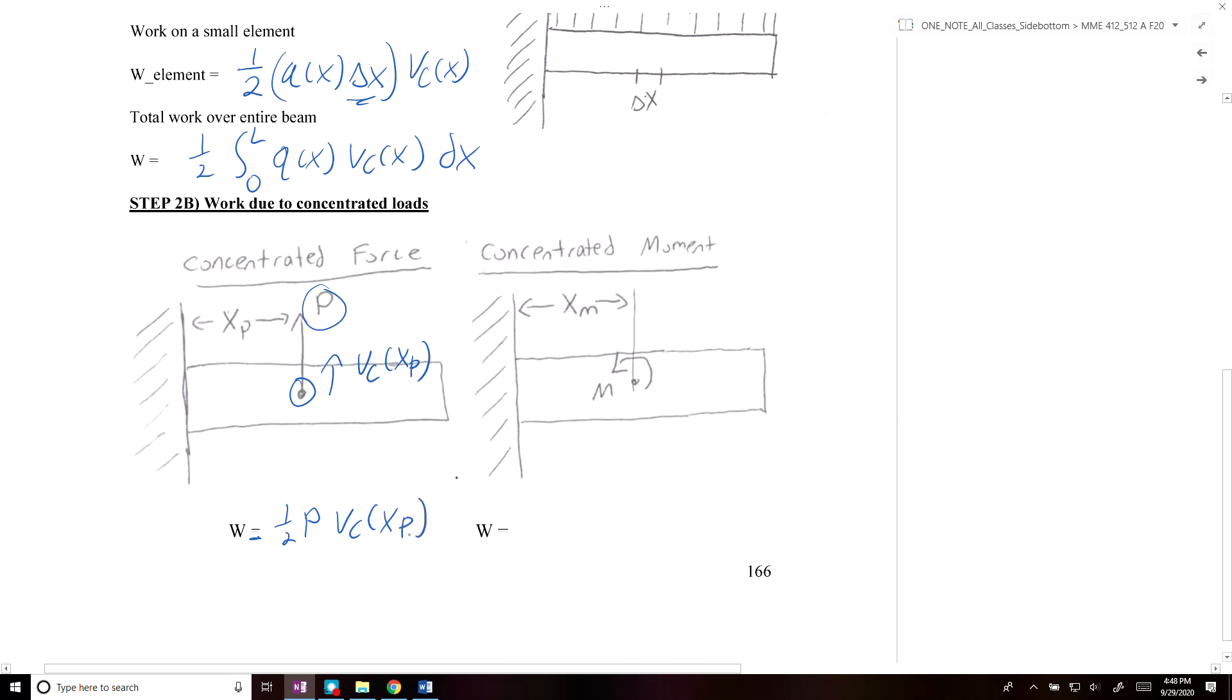We can do a similar thing for the work due to a concentrated moment. The work due to a concentrated moment is 1/2 of the applied moment M at that point times the derivative of Vc with respect to x, evaluated at the location where the moment is applied, at x equals xm.